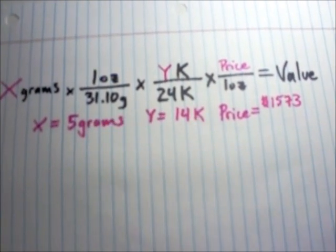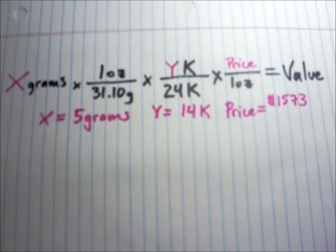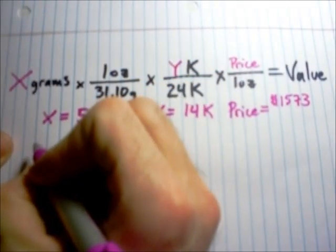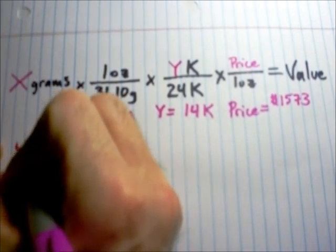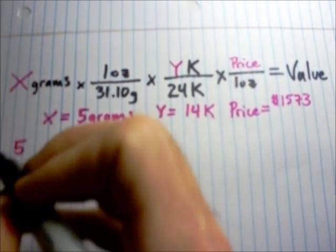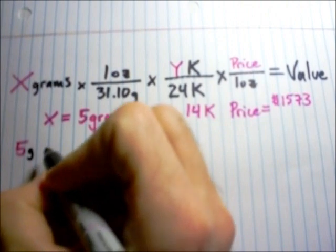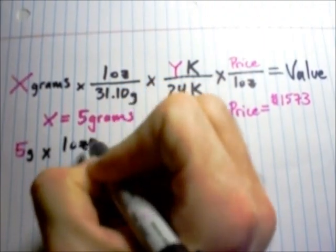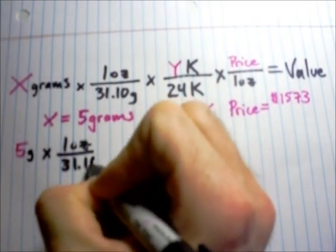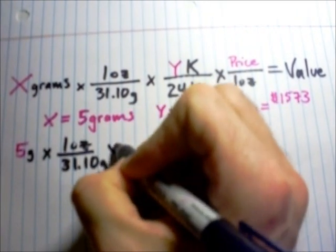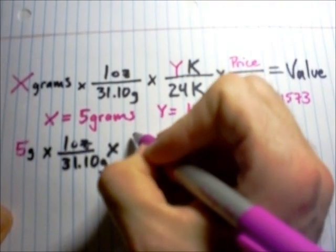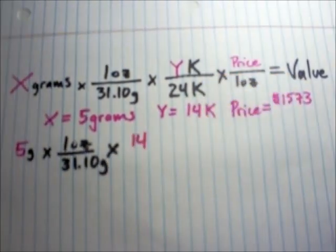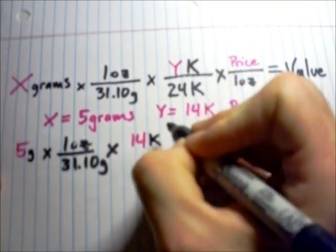All right. So, I'm going to rewrite this equation. And I'm just going to plug in my numbers. Hopefully, I'm not losing any of you. So, we're going to have five grams times one ounce per 31.10 grams times we got 14 carats, just write my unit in black.